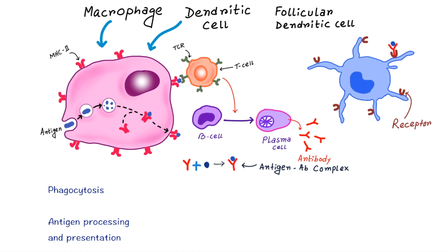To summarize the differences: macrophages are strongly phagocytic but have slightly less antigen presenting capacity than dendritic cells. Dendritic cells are strongly antigen presenting but have less phagocytic activity than macrophages. Unlike macrophages and dendritic cells, follicular dendritic cells do not phagocytose or process the antigen with MHC class 2 molecule — they simply hold the antigen-antibody complex for a long time.